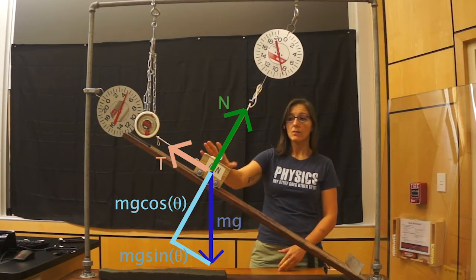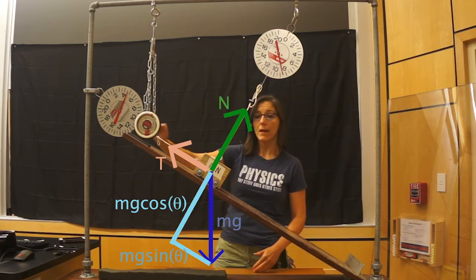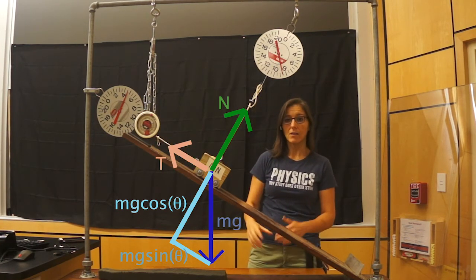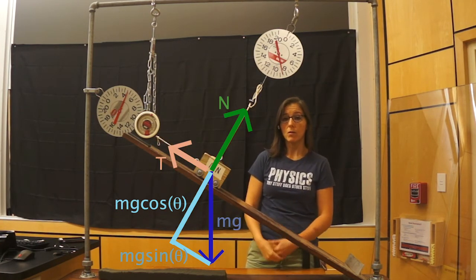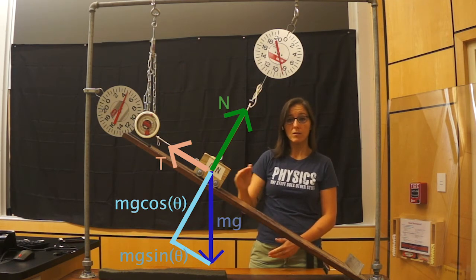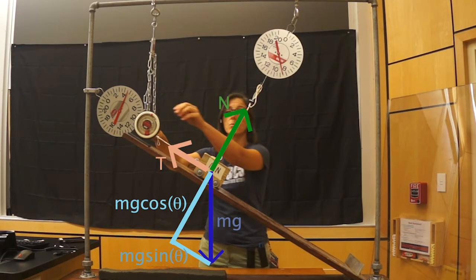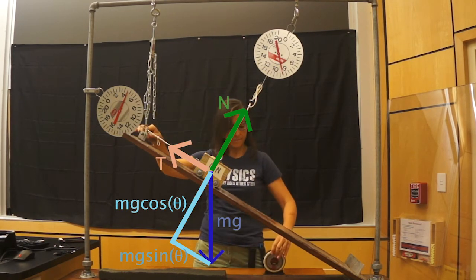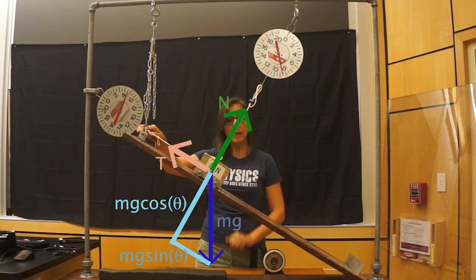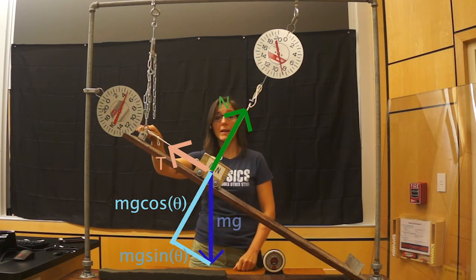To prove that these forces are in fact balancing the object and not a sleight of hand, but in fact showing you the components of gravity along and perpendicular to the incline, I can pull out the support. I can pull out the incline and we'll see the scales remain unchanged.